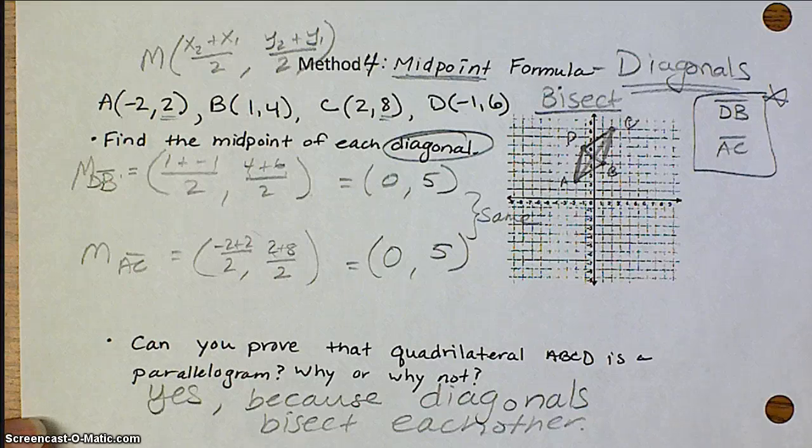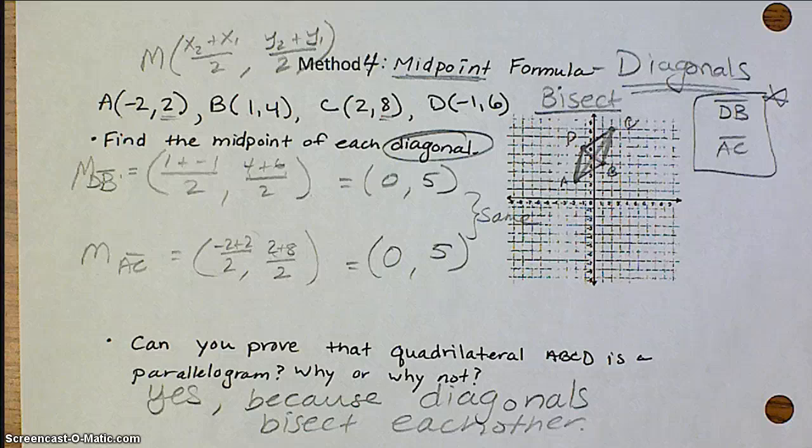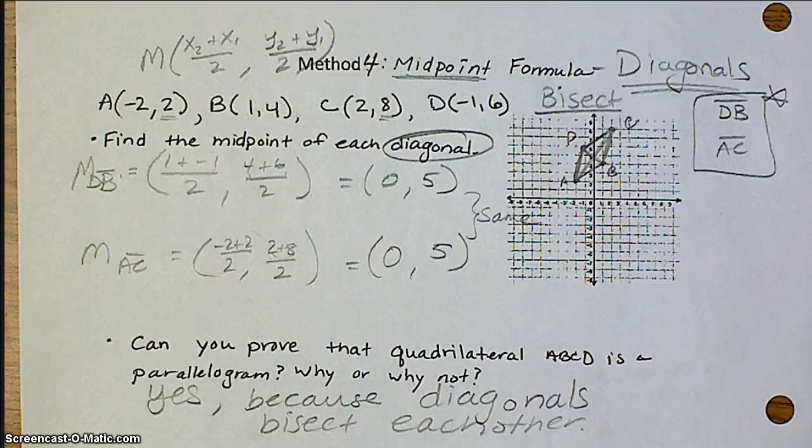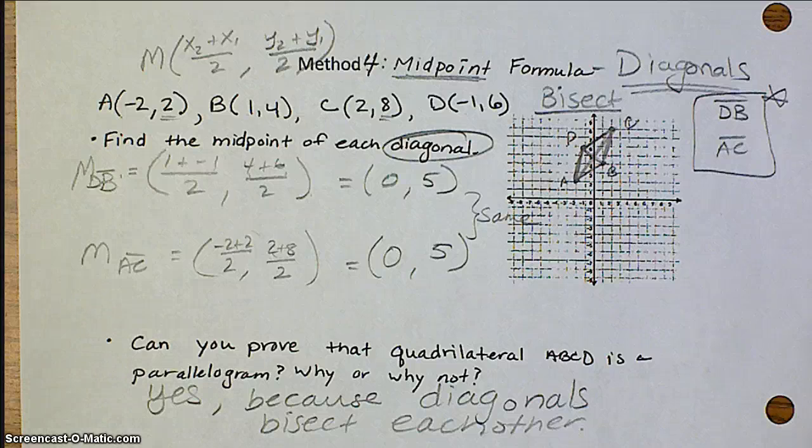These are the four methods for proving that a quadrilateral is also a parallelogram on the coordinate plane. So you really need to know your formulas for distance formula, slope formula, and midpoint formula. Good luck, and let me know if you have any questions. I'll be happy to set up an appointment.